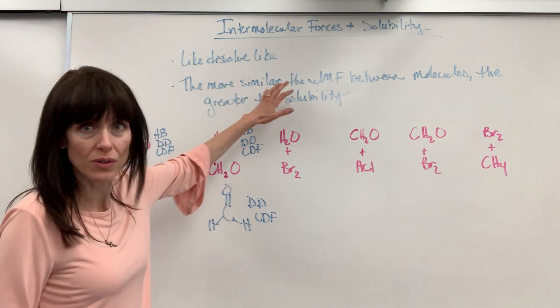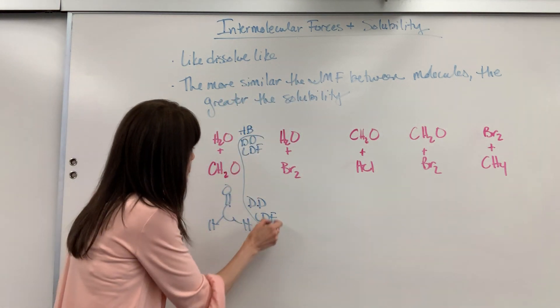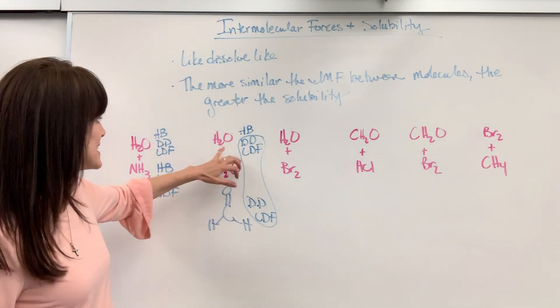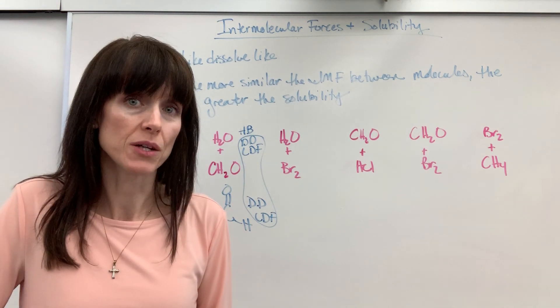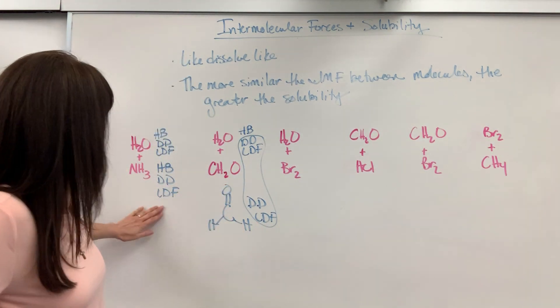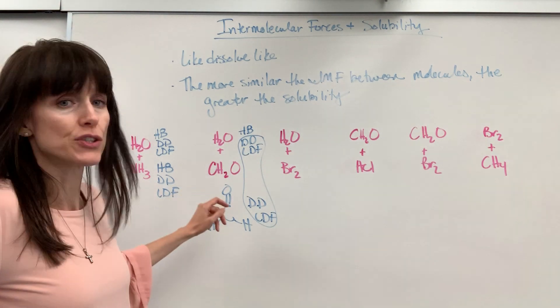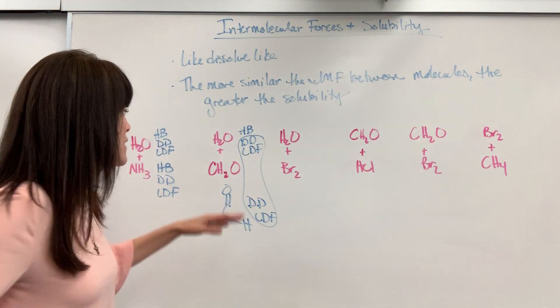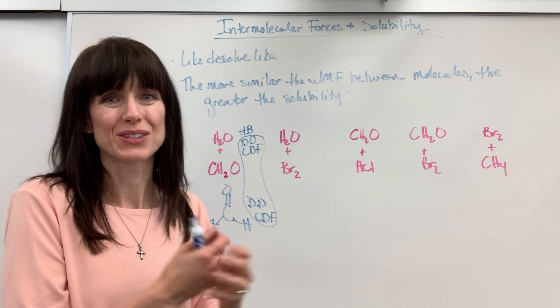Remember the more similar the IMF, the greater the solubility. Well, it's the dipole-dipole, London dispersion. Even though this does not have hydrogen bonding, it does have dipole-dipole, London dispersion between the two of them. So this would be soluble. This would dissolve. Now will it dissolve as well as ammonia? No, because it doesn't have hydrogen bonding. But will it dissolve? Yes, because there's similarities where the partial positive and negatives can interact and attract one to another.